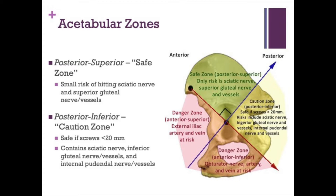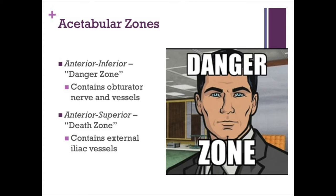The posterior inferior zone is the caution zone — generally safe if screws are less than 20 millimeters, but screws could protrude into the greater or lesser sciatic notches. The anterior inferior is the danger zone, containing the obturator nerve and vessels. The anterosuperior is the death zone, containing the external iliac vessels. In general, you want to avoid the anterior quadrants of the acetabulum because of what lies on the other side — even short screws can be dangerous in these zones.